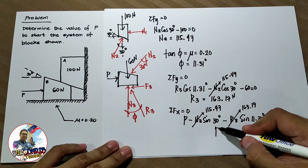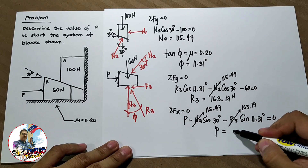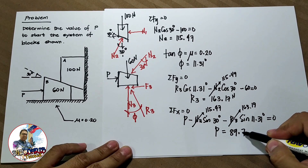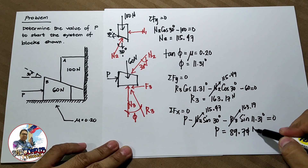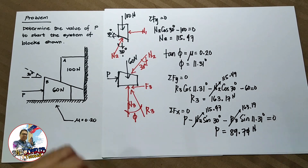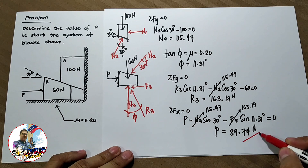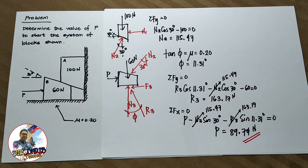It follows that the value of P is 89.74 N. So we have that as our final answer.